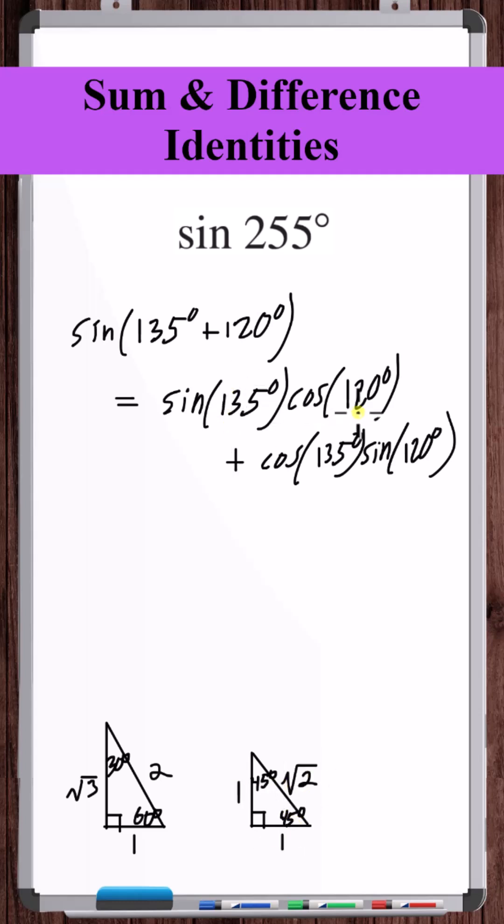135 and 120 are both in the second quadrant. 135 has reference angle 45 degrees, 120 reference angle 60 degrees.